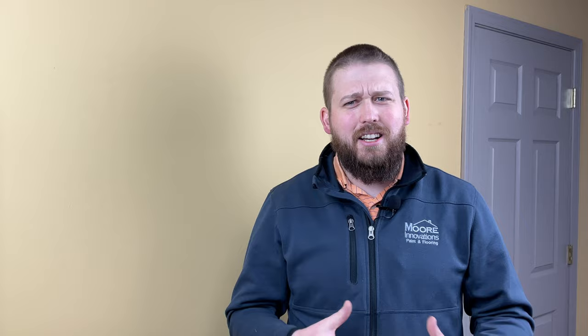One way that you can tell if you aren't putting enough paint on is if the roller starts to sound more dry or sticky as it's rolling. As you roll, it should sound more wet and smooth.